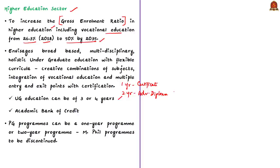This policy may reduce the importance of the master's degree. Under multiple entry and exit points, credits earned by students in different periods will be digitally stored in an Academic Bank of Credit. This benefits students who discontinue higher education for various reasons — they can move on with appropriate certificates or diplomas, and later use credits from the bank to complete the remaining part of the degree program. This removes the tagging of discontinuing students as dropouts.